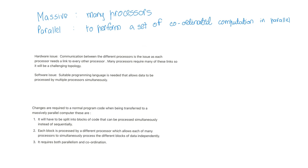These are that it will have to be split into blocks of code that can be processed simultaneously instead of sequentially. Makes sense. So if you have 4 pieces of bread you want to bake, you won't bake all of them in the same oven. You will bake them in 4 different ovens. This terminology might not make much sense because an oven can usually bake 4 breads. But imagine if you have 60 breads. You won't bake 10 after 10 in several batches. You will bake them in 10 different ovens. Each block is processed by a different processor. Which allows each of many processors to simultaneously process the different blocks of data independently. And it requires both parallelism and coordination.